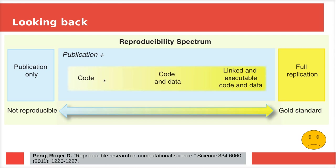In his older paper, Roger Peng published a figure he calls the reproducibility spectrum. He claims that a publication without code is not reproducible; with code it's more reproducible; with linked executable code and data, even more so — and that should be the gold standard. Upon first glance I think it's a nice figure, but I think something is wrong with it. I think we can make it superior and updated, and I'll do that later.